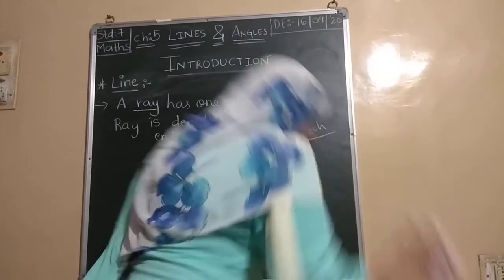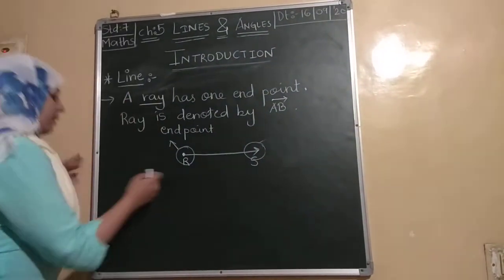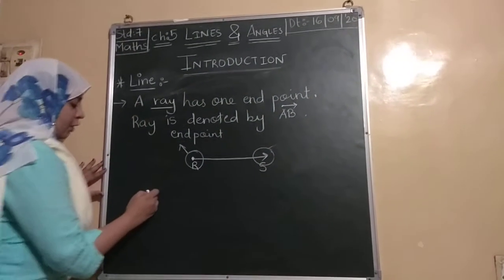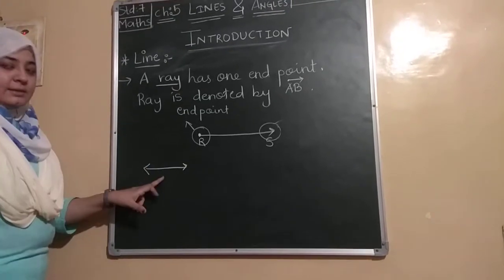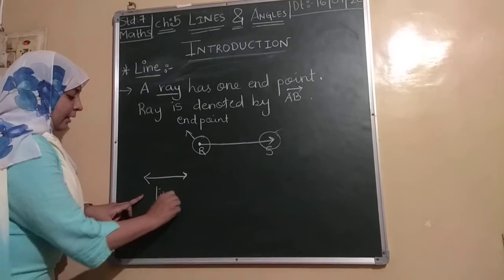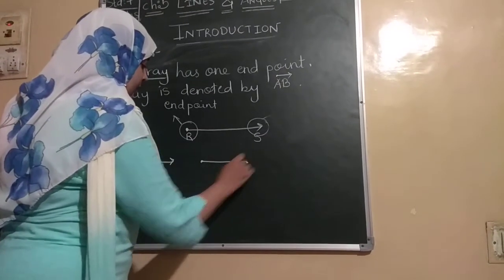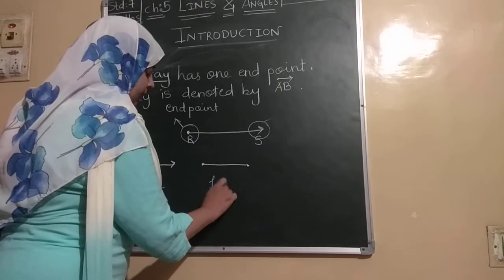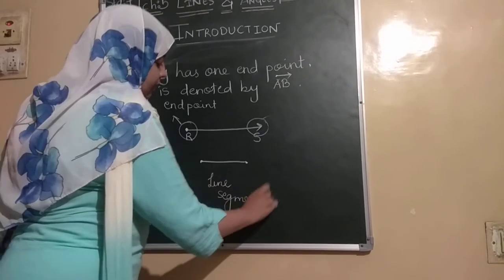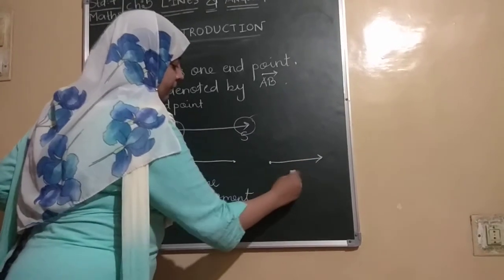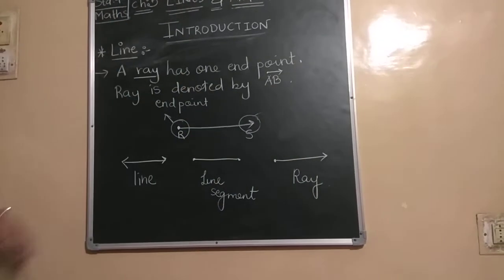Now, look here. If we talk about line, first we studied line. This is the line symbol. So, this is known as a line. Then, we have studied line segment. This is line segment. And last, we have studied ray. So, this is ray. Got it?